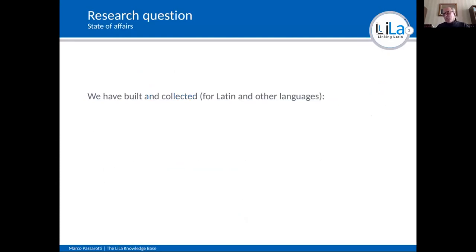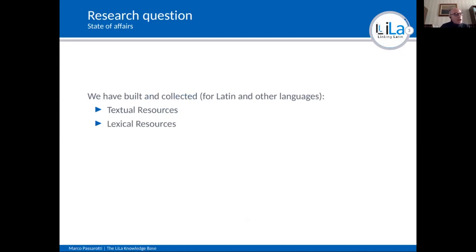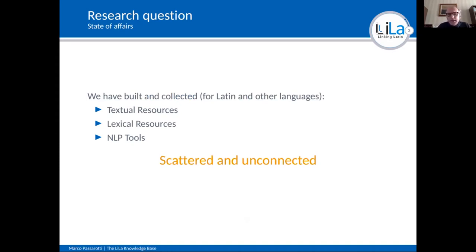Why did we start to build Lila? Because of a research question reflecting the state of affairs. Across the decades we have built and collected for Latin, for Neo-Latin, and for many other languages, a lot of textual resources like corpora, lexical resources like lexica and dictionaries, and natural language processing tools like a part-of-speech tagger. The problem is that these resources and tools are currently scattered and unconnected.